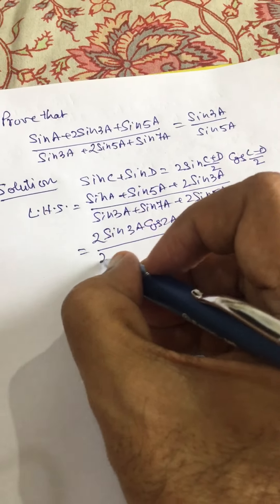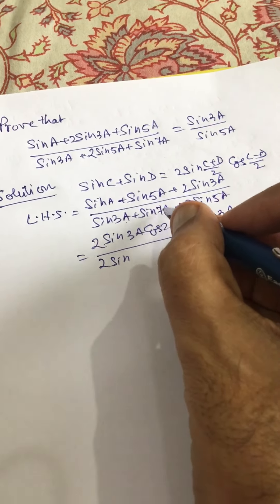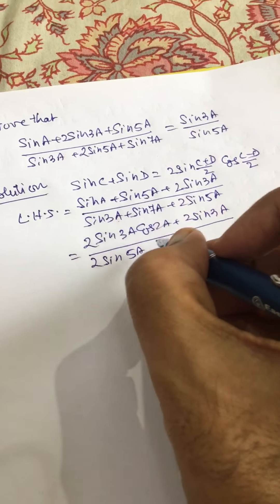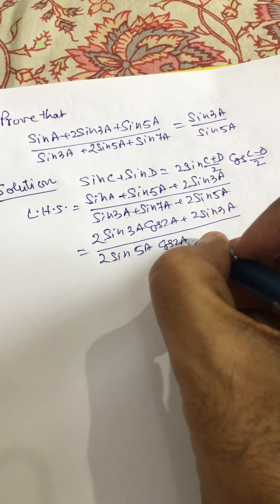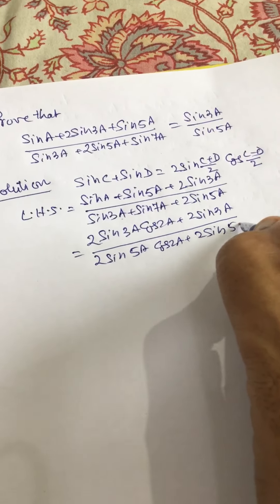This becomes 2 sin, 3A plus 7A is 10A, that is 5A, and 4A then cos 2A, giving 2 sin 5A.